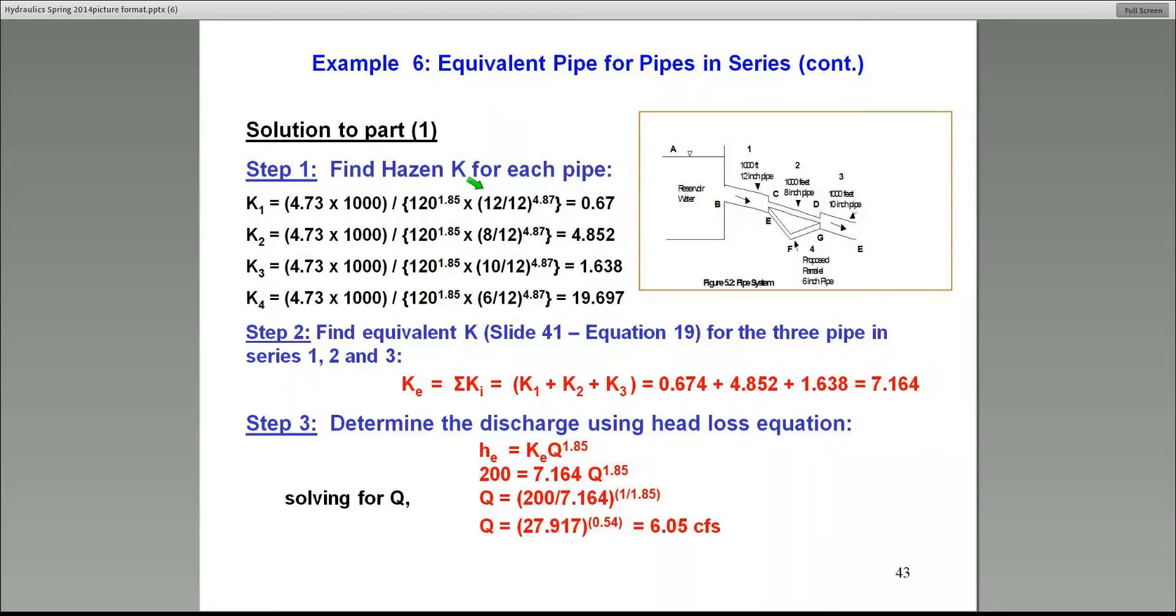We calculate K values for each pipe: pipe 1 has K = 6.67 for a 12-inch pipe, 1,000 feet long, with C = 120. Those are all the K values, including pipe number 4, which is the fourth pipe that I'm going to add in the second part of the problem.